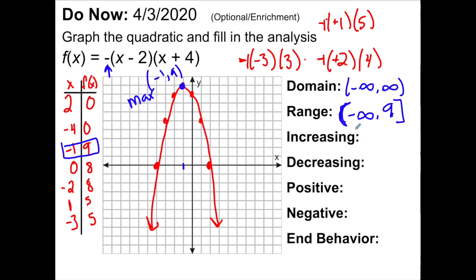Where is it increasing? Remember, this should be x values. So from negative infinity to negative 1. Because remember, you use x values. So it stops increasing when we get to negative 1 on the x-axis. And then it's decreasing from negative 1 to infinity.